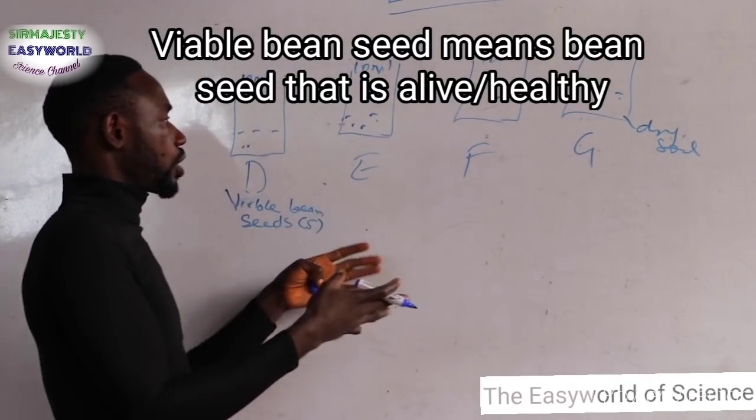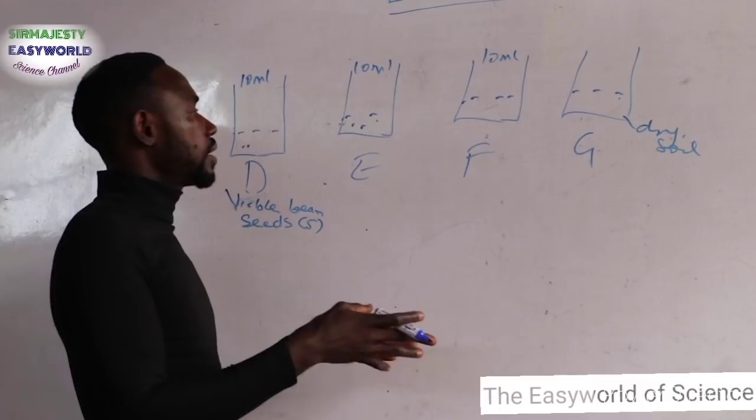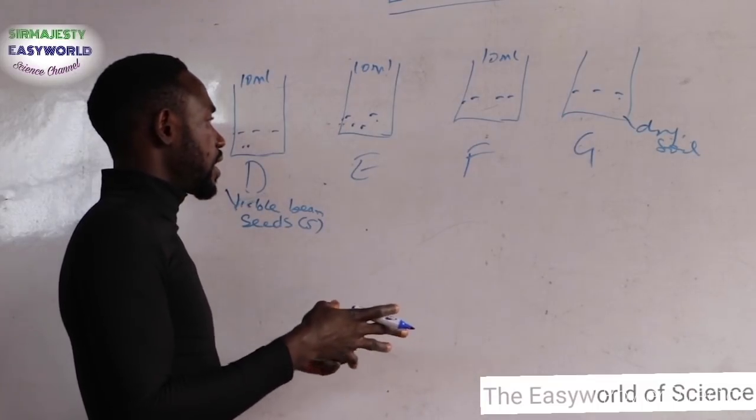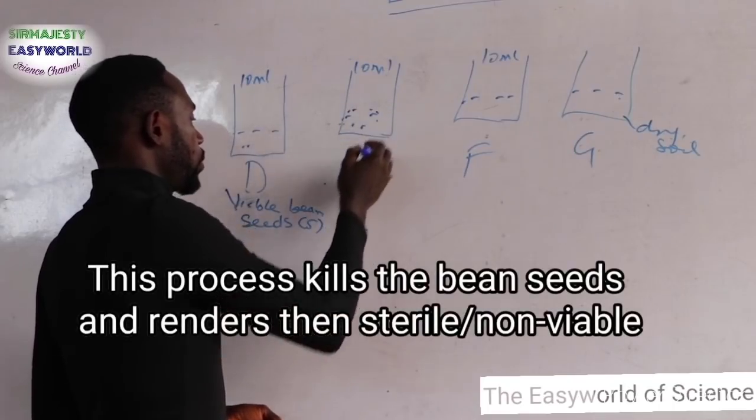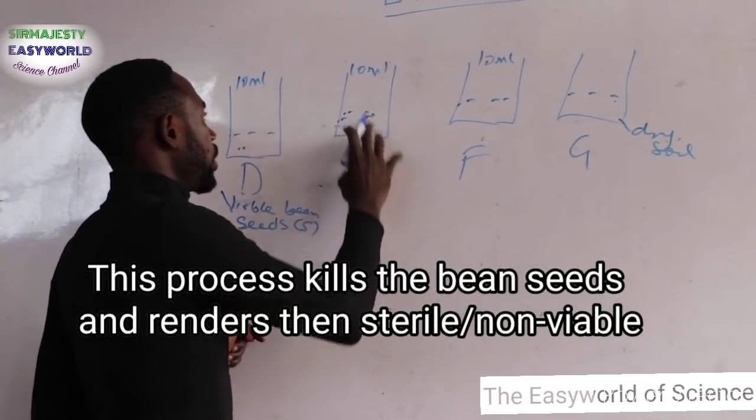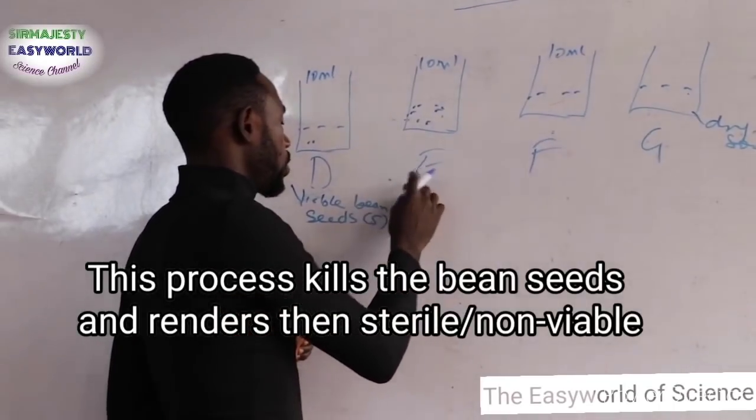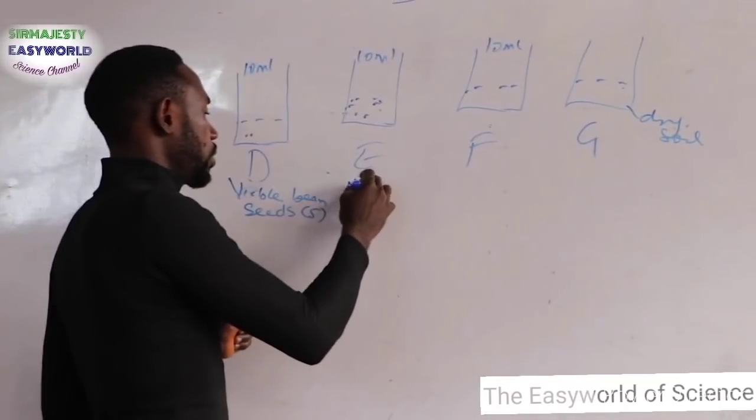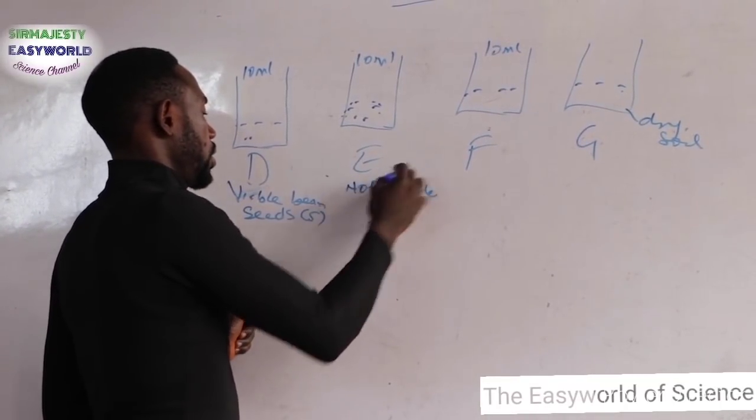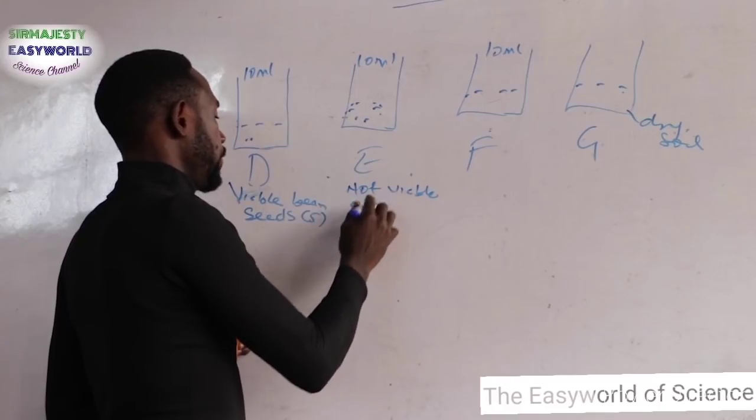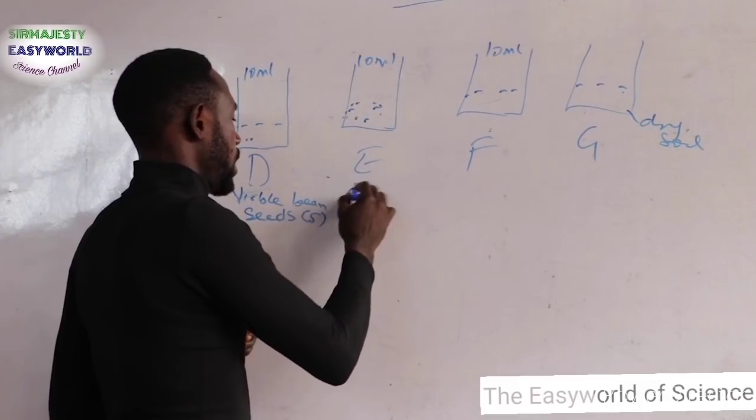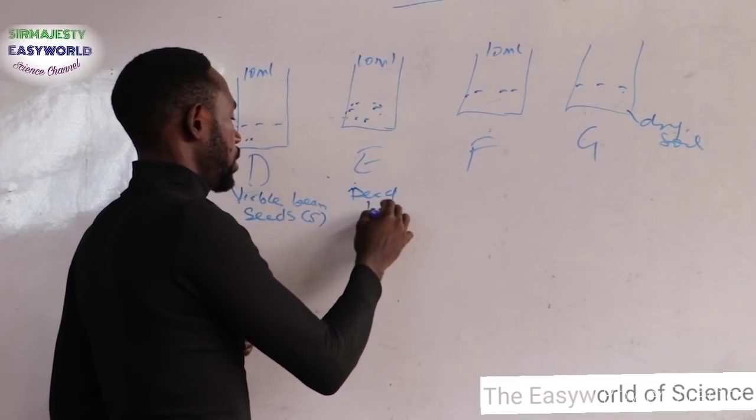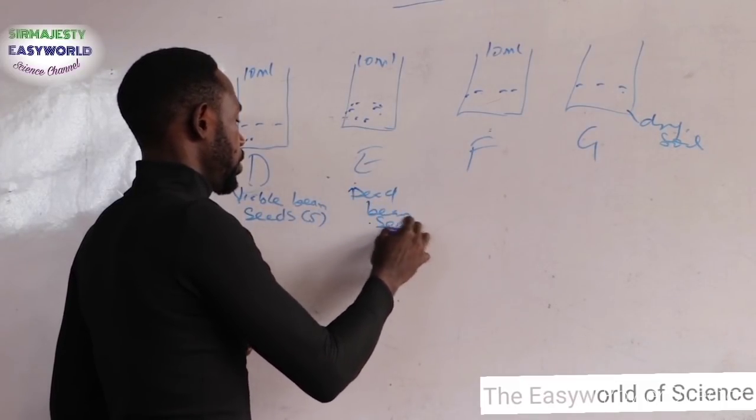To the first one, D, you are asked to add about five viable bean seeds. Here in E, you soak the bean seeds in water, remove the testa (the seed coat), remove the cotyledon and put it here. So this particular E has dead bean seeds, not viable.